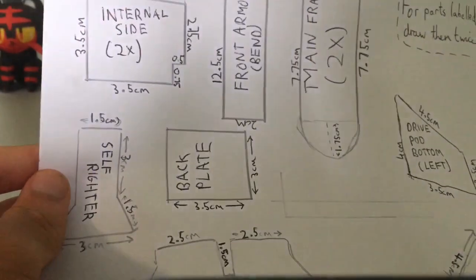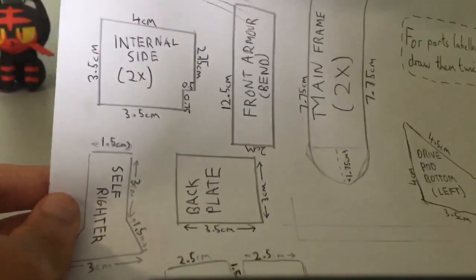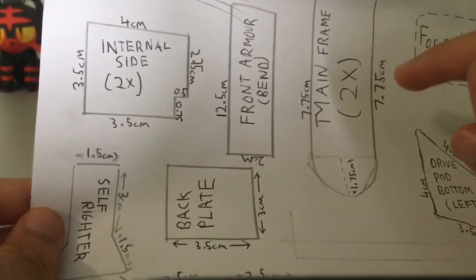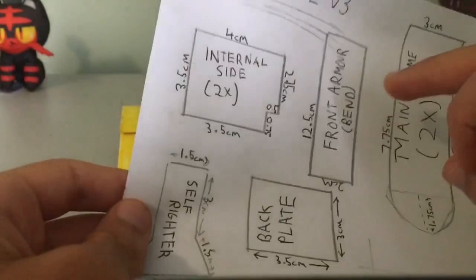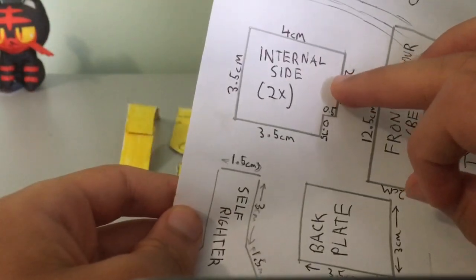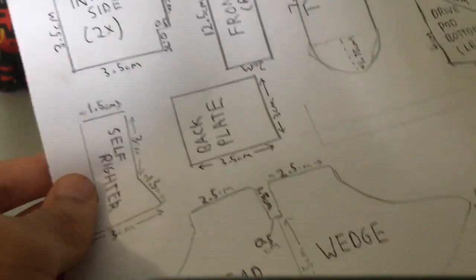To start off with, we are going to be making the central bit of ORBY Blade. So to make this, you're going to need to draw out this mainframe piece twice. One will be the top panel, and the other will be the base panel. You need to draw this front armor piece out, and two of these internal side pieces, and of course the back plate. That is all you will need to start off with.